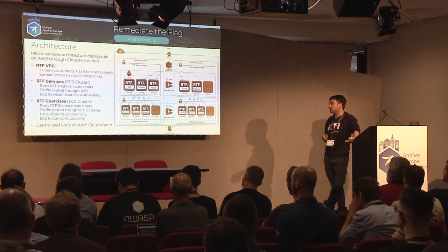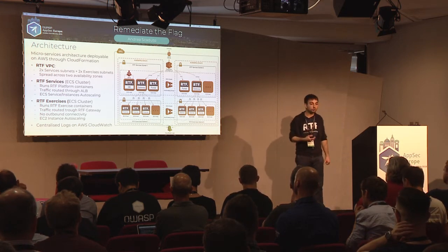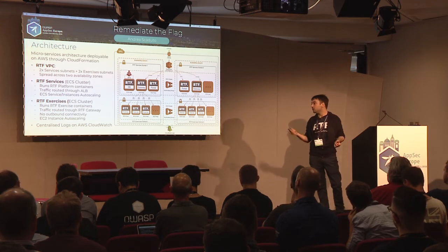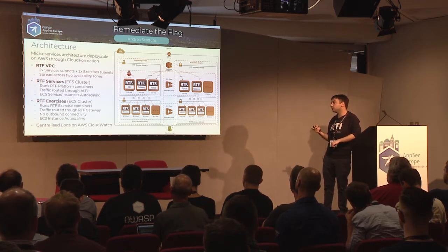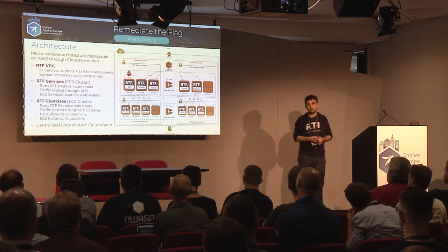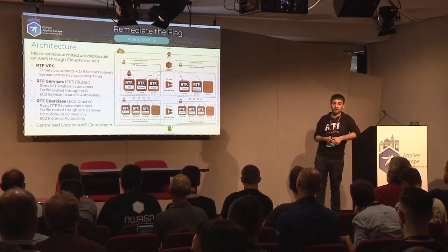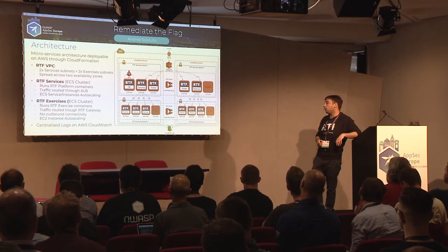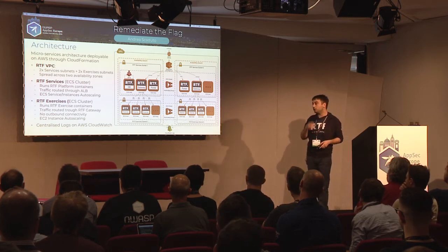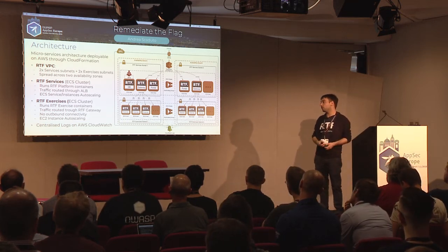In the other two subnets — the RTF exercise subnets — we deploy a separate ECS cluster for RTF exercises. Every time a user wants to run an exercise, a Docker container is deployed in this cluster. Traffic to these containers is only allowed through the RTF gateway, and the containers have no outbound connectivity — they cannot share data with the host or outside the container, making them very DLP-friendly for corporate environments. All logs are pushed to AWS CloudWatch.